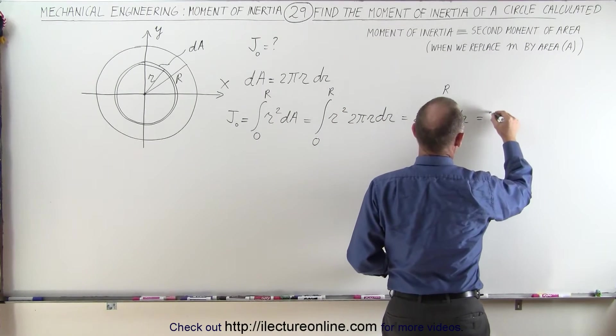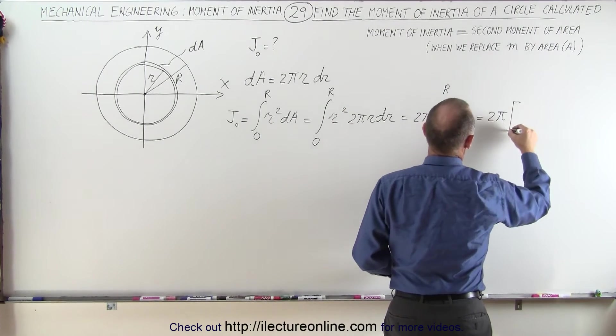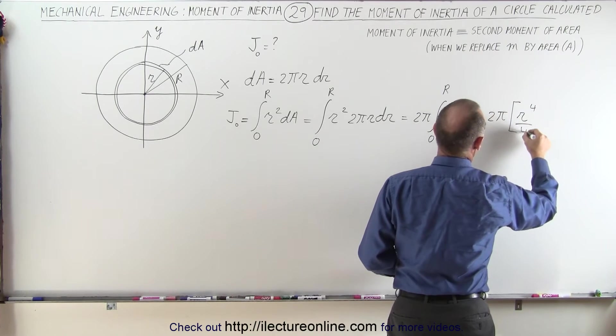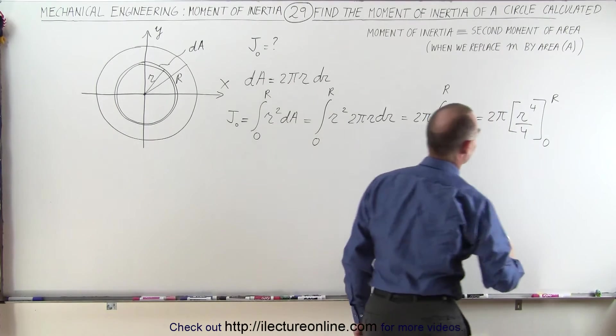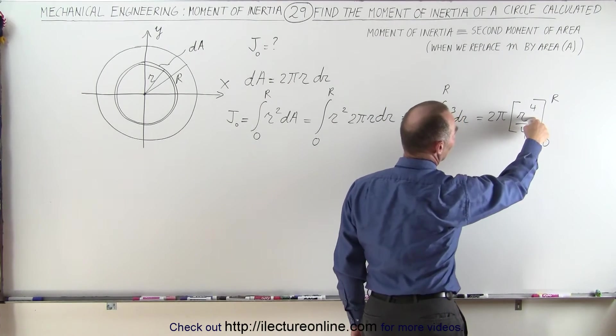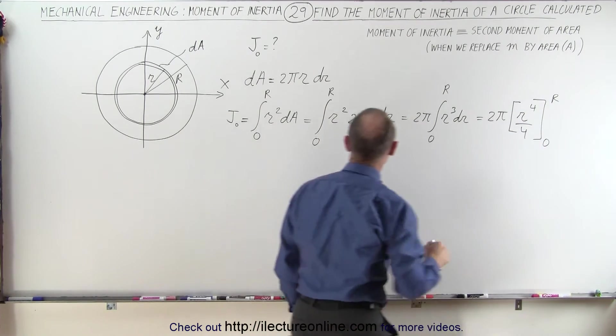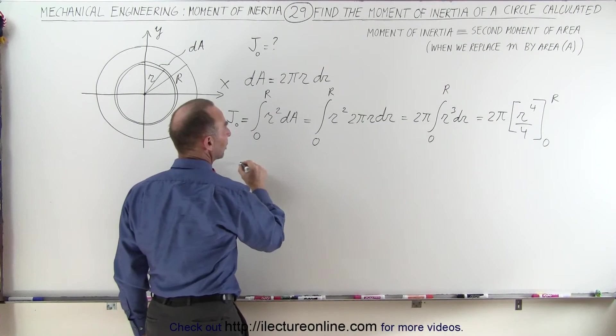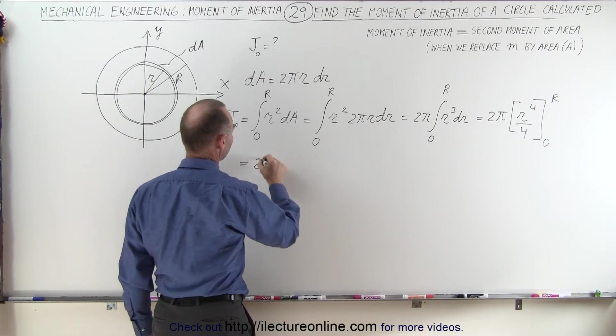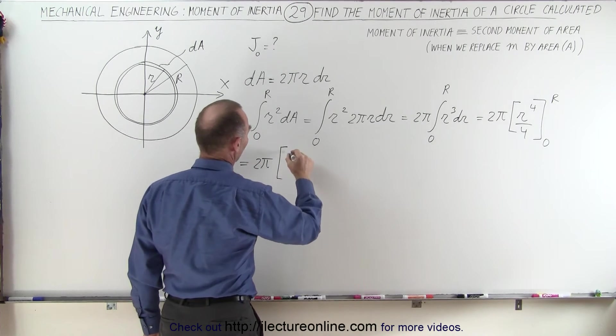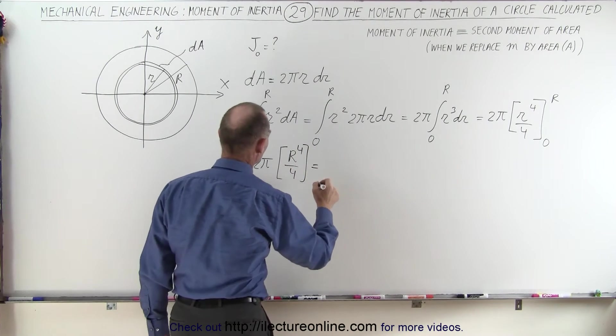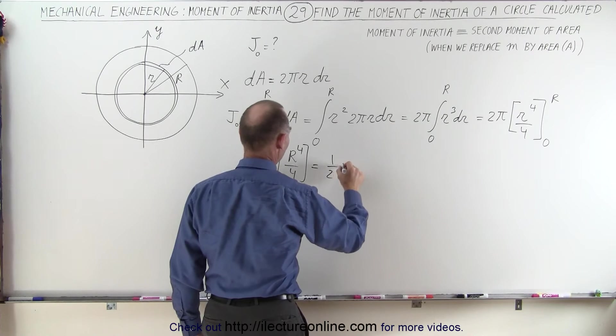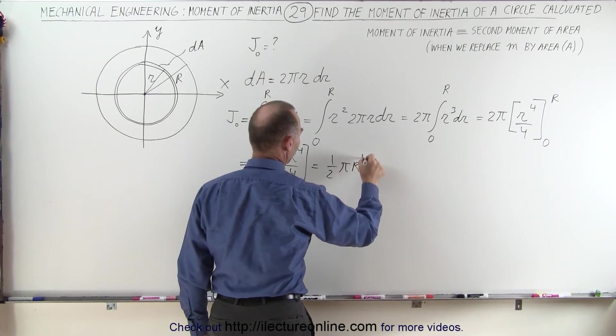So this is equal to 2 pi times r to the 4th over 4, evaluated from 0 to r. When we plug in the lower limit, we get 0. So all we need to do is plug in the upper limit. So this becomes equal to 2 pi times r to the 4th, divided by 4, which is equal to 1 half pi r to the 4th.